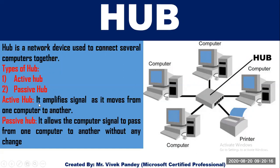Active hub amplifies the signal as it moves from one computer to another. Passive hub allows the computer signal to pass from one computer to another without any change.